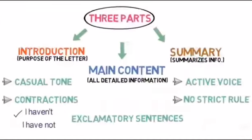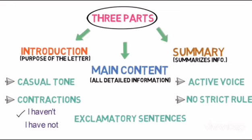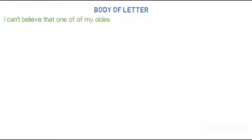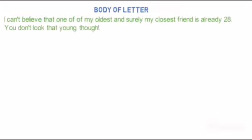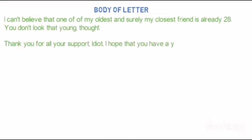The body of the letter may be divided into 3 parts — main content, details, and summary — or it may not have any such partition. Let's write the body: 'I can't believe that one of my oldest and surely my closest friend is already 28. You don't look that young though, huh? Thank you for all your support, idiot. I hope that you have a year full of blessings. Oh, I forget — you already have me, the best blessing.'